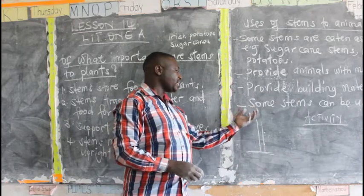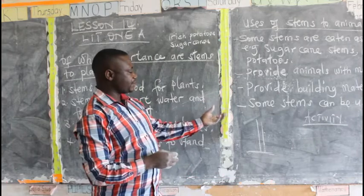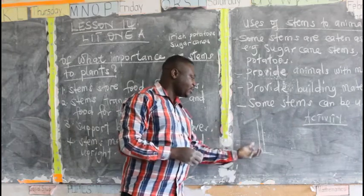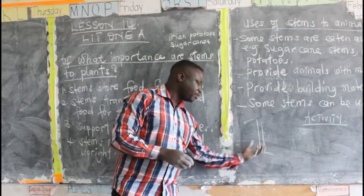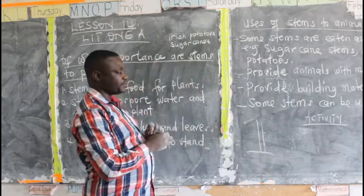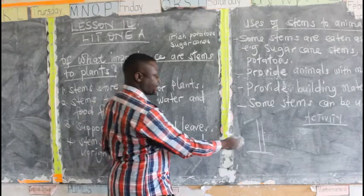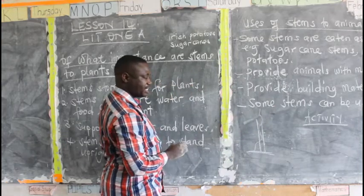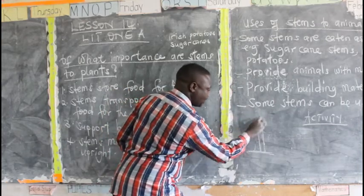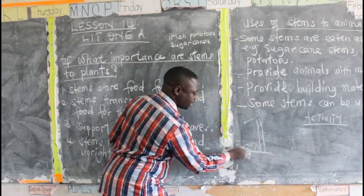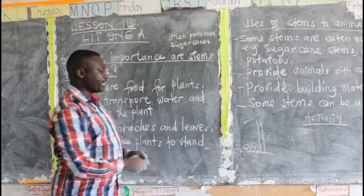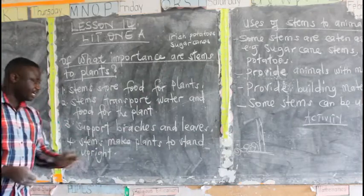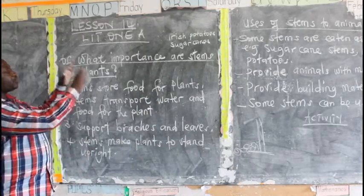Some plants, if not given support, begin to creep — they fall backward or grow along the ground, like passion fruits. If not given support, the stem can't grow upright; instead it remains creeping down, which can cause it to rot. So stems hold and make plants stand upright.